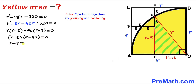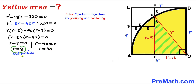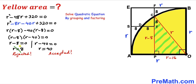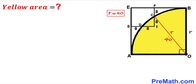Separating the factors gives r − 8 = 0 and r − 40 = 0, so our two solutions are r = 8 and r = 40. R = 8 is not feasible because substituting 8 for r gives 8 − 16 = −8, and a length cannot be negative. Therefore we reject r = 8 and accept r = 40, so the radius of this quarter circle is 40 units.